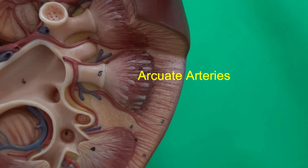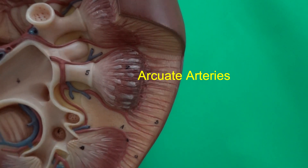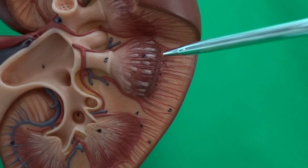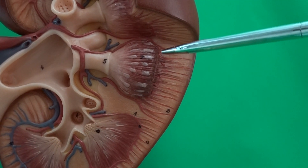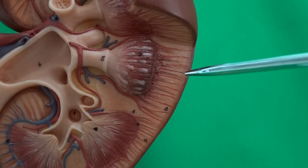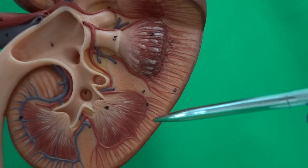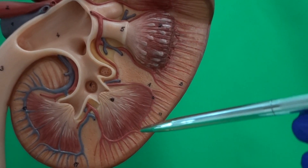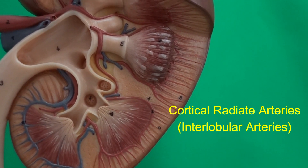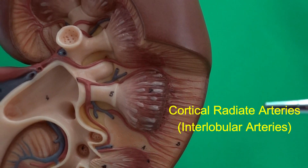From the arcuate arteries on the base, we get some arteries that extend through the renal cortex. We name the arteries that extend through the renal cortex cortical radiate arteries, or interlobular arteries.